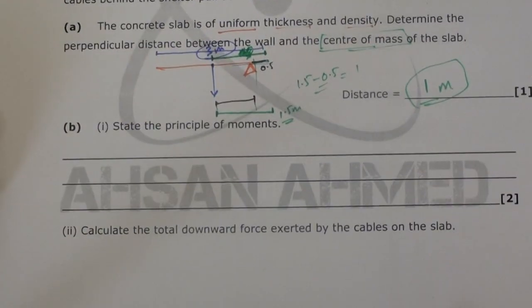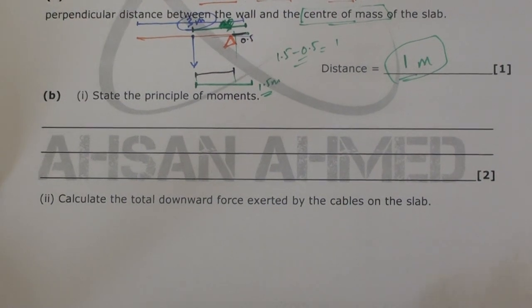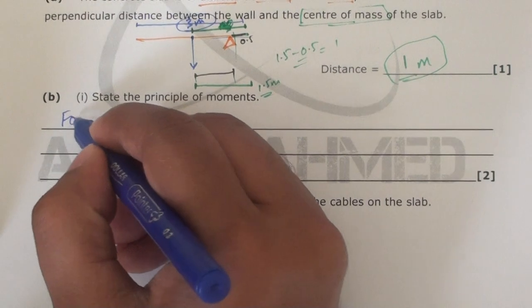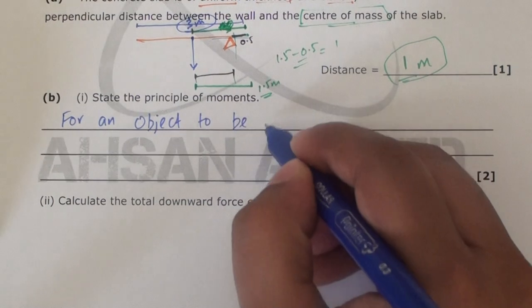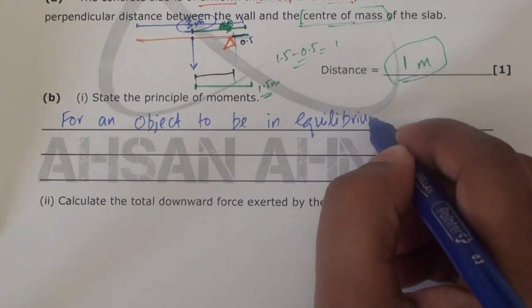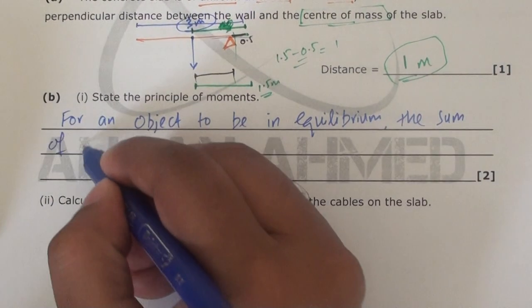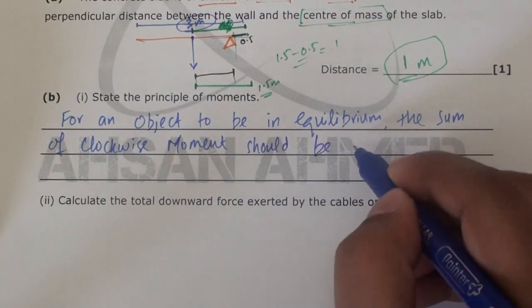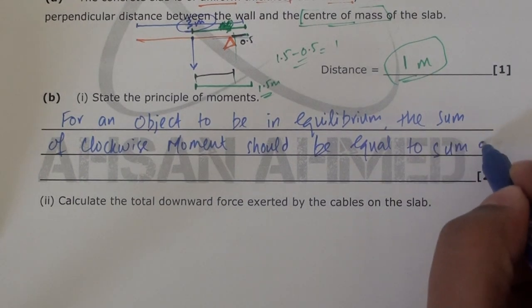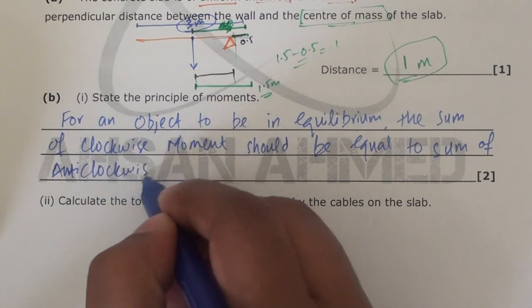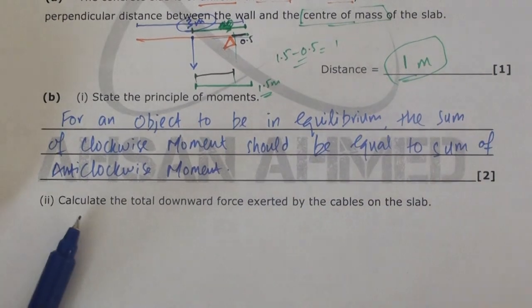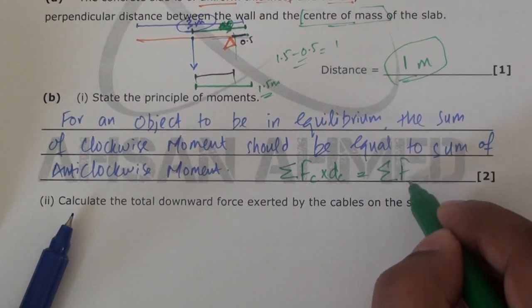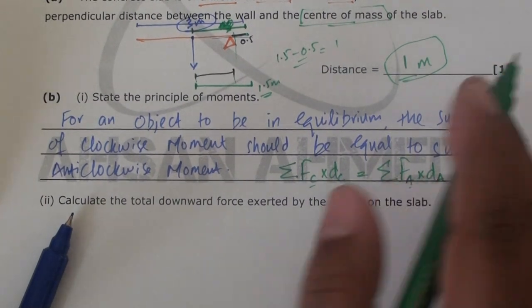By the way, the next part is state principle of moments. This question is very popular. You should know the statement by heart. And that is: for an object to be in equilibrium, the sum of clockwise moments should be equal to sum of anticlockwise moments. Just go mathematically, then we can write sum of Fc times dc is equal to sum of Fa times da. C represents clockwise and A represents anticlockwise. We know that, right?